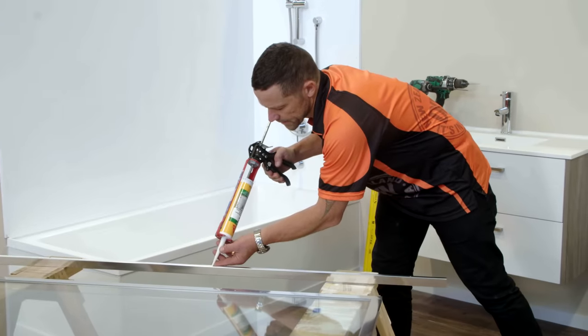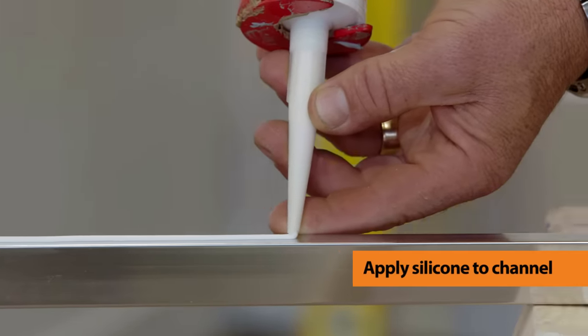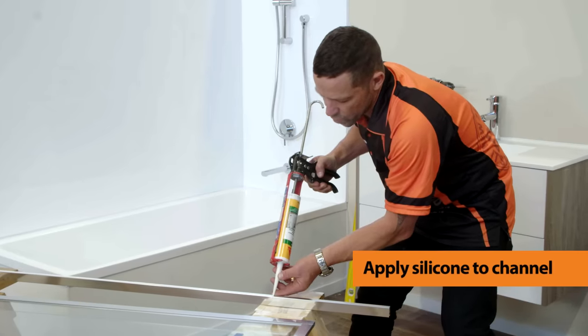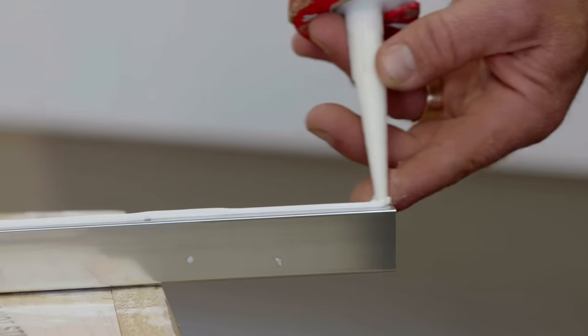So I'm just applying a bead of silicon to the back of our channel. Just make sure the type of silicon that you use is appropriate for your lining. Now I've got an acrylic shower lining, so I'm using the right silicon to accommodate that.